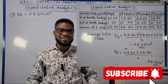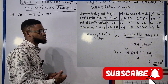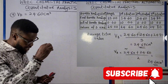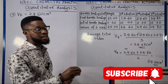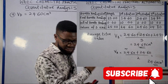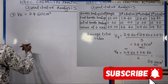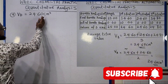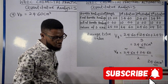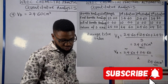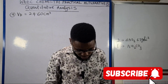This is something we've dealt with in the very first lecture video for this quantitative analysis Alternative B series. We've done that and we've agreed already that 24.60 cm³ is our average volume of D used — what we call the average titer value. So that just answers that.